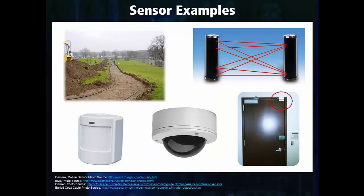Here we have a few examples of sensors. On the top left, there are buried coaxial sensors that can be hidden underground and detect anyone walking over them. To the right, there is an active infrared sensor, which is common in heist movies. The sensor sends an infrared beam to another sensor, and if anything breaks the beam, it triggers an alarm.